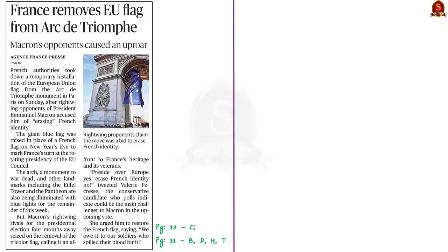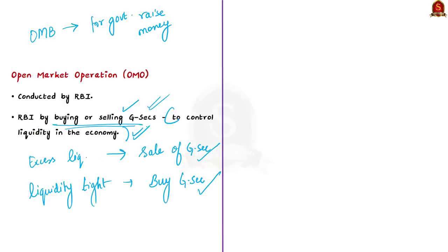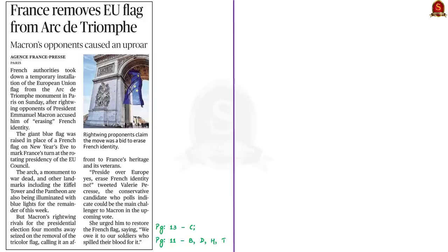To summarize: State Development Loans are bonds normally issued for a 10-year period with interest paid half-yearly. There is a net borrowing ceiling of 4% of GSDP. Open market borrowings and open market operations are similar in mechanism but differ in their basic objective.